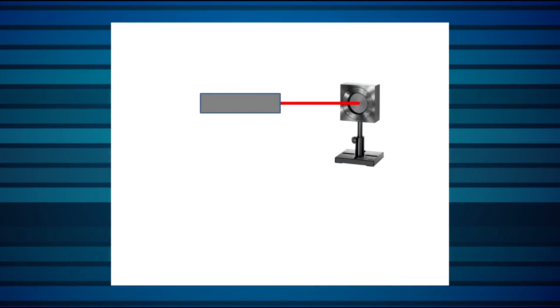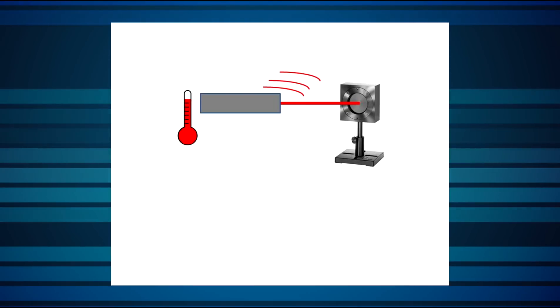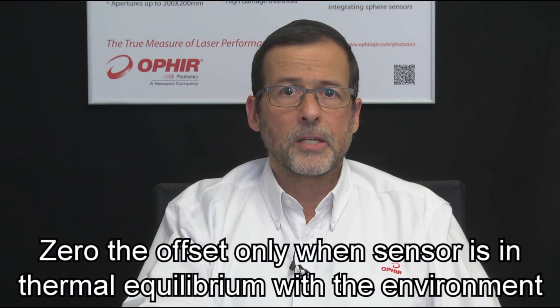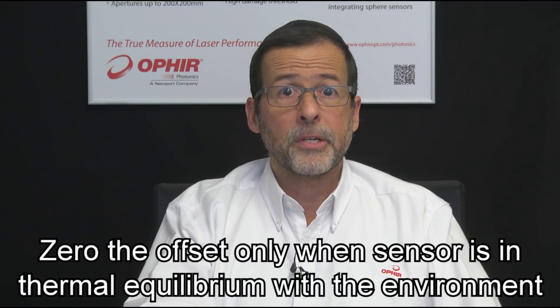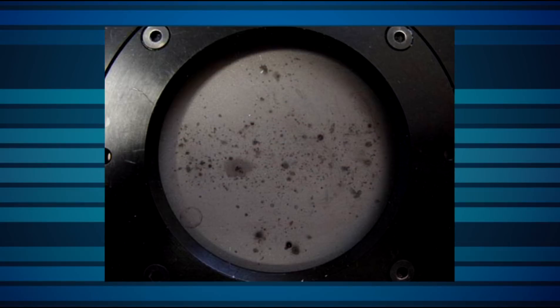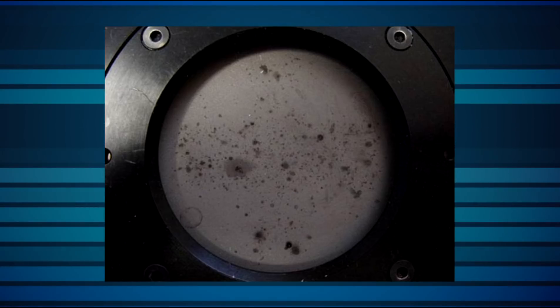For thermal sensors, check that the environment is thermally stable. A temperature change of even 1 degree Celsius per minute can be picked up by a thermal sensor — it's that sensitive — and cause heat flow that would be misinterpreted by the sensor as incoming laser power. Check that there's no nearby heat source causing any thermal offset; that might even be the light source itself. Zero the sensor offset only when the sensor is in thermal equilibrium with its environment. Otherwise, you might be zeroing out an offset that will soon change, and continuing to subtract its value from readings would then introduce an error. Be sure the sensor is clean — trivial perhaps, but worth checking just in case.